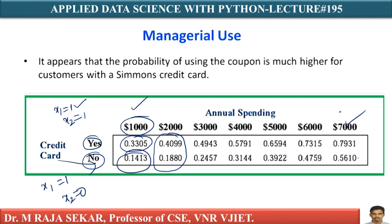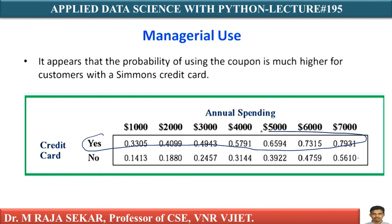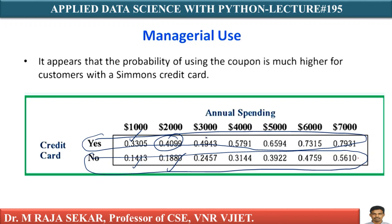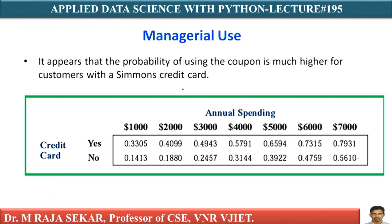When you compare the probabilities, the person having the credit card has more chances of using the coupon. Yes means using credit card, No means not using credit card. 0.3305 is greater than 0.1413; 0.4099 is greater than 0.1880; 0.4943 is greater than 0.2457. If a person possesses a credit card, there is a higher probability of using coupon. If a person does not have a credit card, there is less chance of using the coupon.